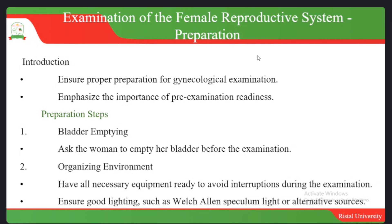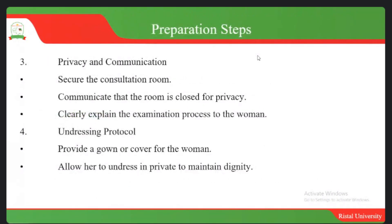You also have to ensure good lighting. Equipment such as the Welch Allyn speculum, which has a light, can be used, and if you don't have that, you can use alternative resources that are available, because you need enough light to inspect and observe exactly what is happening in relation to the female reproductive system.